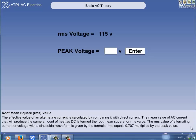Aircraft AC generators normally operate at an RMS voltage of 115 volts. What to the nearest volt will be the peak voltage? Type your answer in the box and click on Enter.